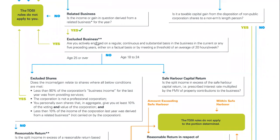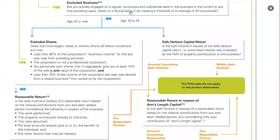Excluded business would allow you out if you work in the business 20 hours a week — regular, continuous, substantial basis is the rough threshold here. There are other ways to meet this but 20 hours is the bright line test. And that is not the case here. Now we follow the fork down — age 25 or over — and we keep working through excluded shares. This is what you're generally going to be looking for in family business situations where you've got a husband and wife in business together — the excluded shares rule. And you have to meet all four conditions.